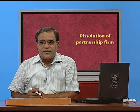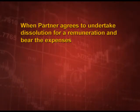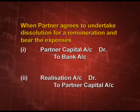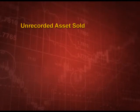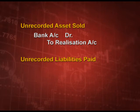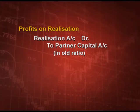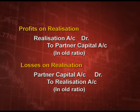If a partner agrees to undertake the dissolution for a particular remuneration and bear the expenses, two journal entries are made: first, Partner Capital Account debit to Bank; and second, Realization Account debit to Partner Capital Account. If any unrecorded asset is sold, debit Bank Account and credit Realization Account. If any unrecorded liability is paid, debit Realization Account and credit Bank Account. If there is a profit, debit Realization Account and credit Partner Capital Account in the old ratio. For a loss, a reverse entry is passed.